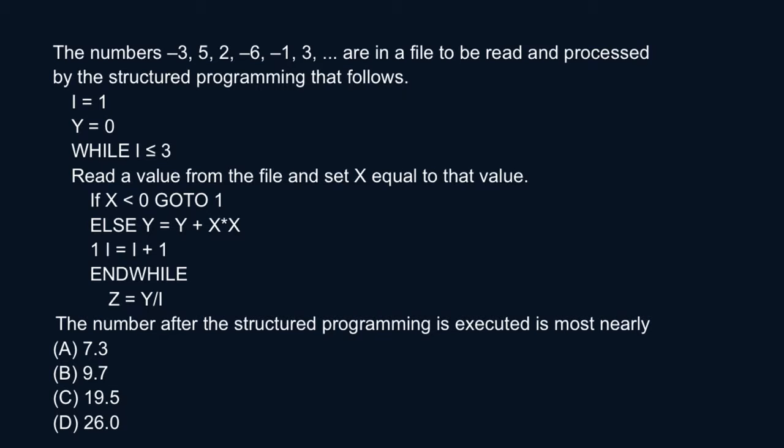We don't have a lot of space here but we'll try to make it happen. So here we have the numbers to be read in a file. X is going to be equal to whatever we read in the file. So X options would be these values: minus three, five, two, minus six, minus one, and three. These are your options for X. You always want to start with the known and unknown.